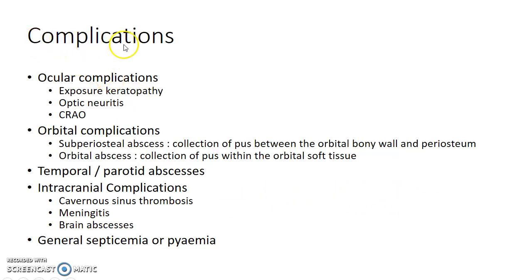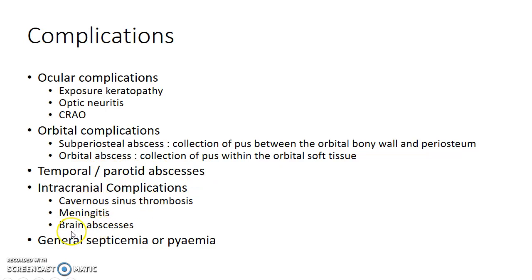What are the complications of orbital cellulitis? If not treated properly, it can lead to ocular complications like exposure keratopathy, optic neuritis, and central retinal artery occlusion. Orbital complications include subperiosteal abscess — collection of pus between the orbital bony wall and periosteum — or orbital abscess, collection of pus within the orbital soft tissue. It can also lead to temporal or parotid abscesses, and intracranial complications like cavernous sinus thrombosis, meningitis, and brain abscesses, as well as general septicemia or pyemia.